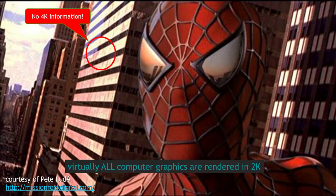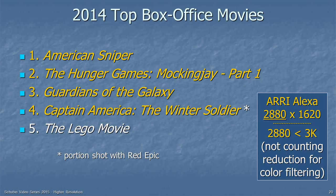Here's another issue with 4K. Movies don't necessarily render their computer graphics in 4K — they might be rendering them in 2K. And speaking of movies, looking at the top box office movies: of the top five in 2014, one was animated, and the other four were shot largely with the ARRI Alexa camera. The ARRI Alexa has less than 3K resolution, and that's not even counting the reduction for color filtering on a single sensor. So there doesn't seem to be much demand for 4K, even in movies.